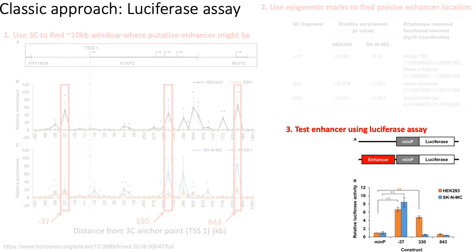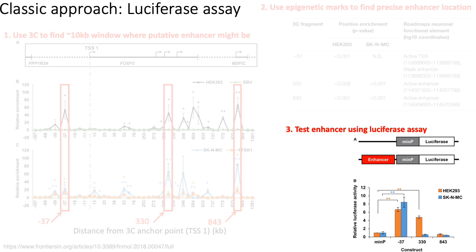Among the different bioluminescent reporters available, luciferase is one of the most commonly used, mainly because you don't need any post-translational modification of luciferase to initiate enzyme activity, and secondly it's not toxic even at really high concentrations in different types of cells — holding true for both prokaryotic and eukaryotic cells. One of the major limitations of the luciferase assay is its throughput: you can't really test even hundreds of different enhancer sequences; it's really only meant to test a handful of enhancers.